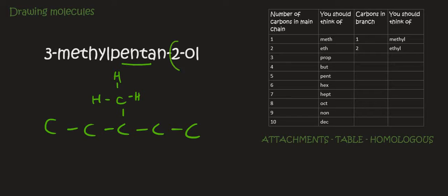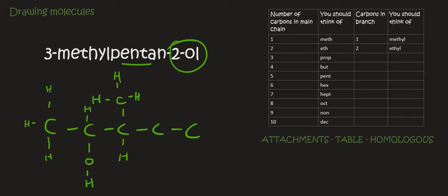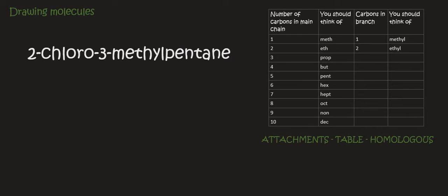And then on carbon 2 we have an '-ol', which is an alcohol. So we can just go O and H, and that's it. You then attach hydrogens everywhere else. What we're doing here is called the structural formula. And so there we have the drawing of 3-methyl-pentan-2-ol.